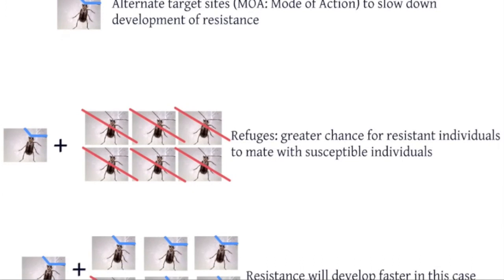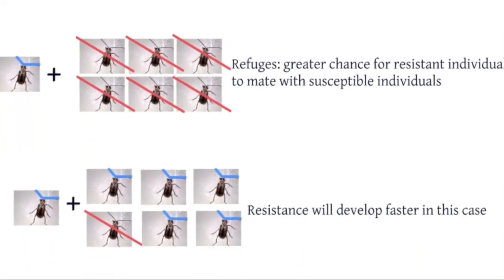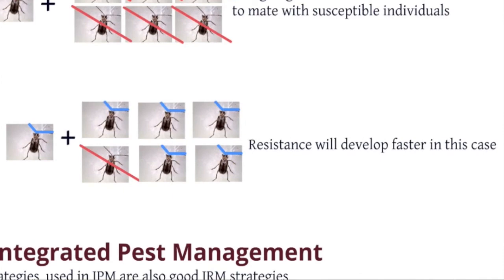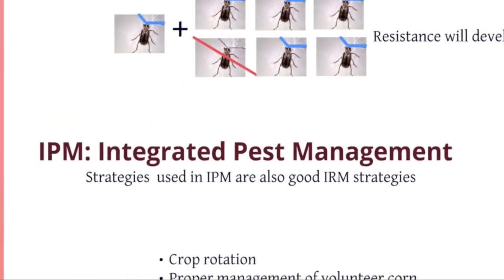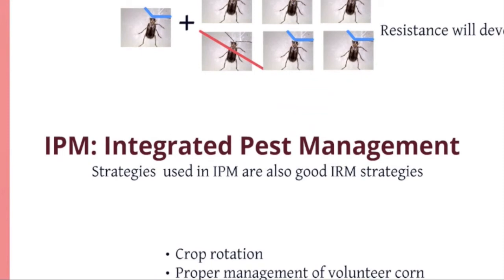Another important component of insect resistance management in the case of BT corn is using proper refuges. This is important because refuges ensure that there are enough individuals who are not exposed to the toxins and are not resistant, increasing the chance of resistant individuals mating with susceptible individuals. If, on the other hand, the resistant individuals are mating more amongst themselves, resistance develops faster. Adhering to specific refuge recommendations for each BT hybrid is crucial.